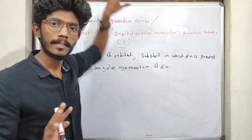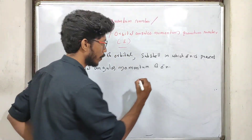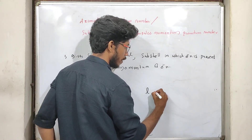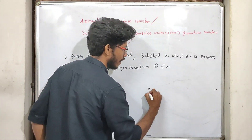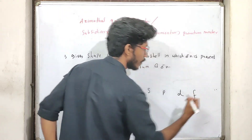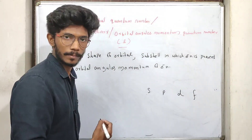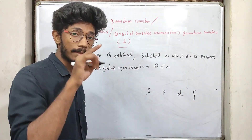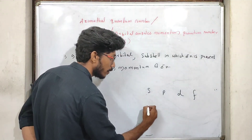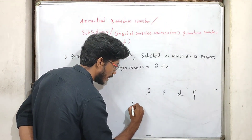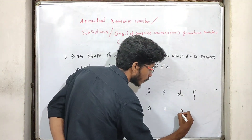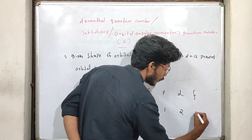We use the letter L. We use it for sub-shells: S, P, D, F. These are our sub-shells. For S, the L value is zero; for P, the L value is one; for D, the L value is two; for F, the L value is three.